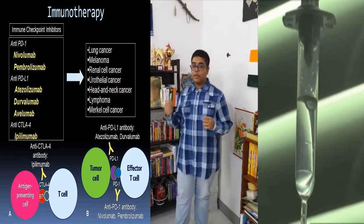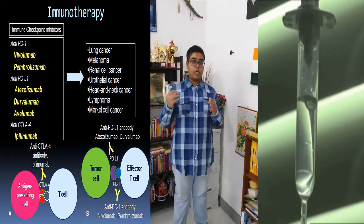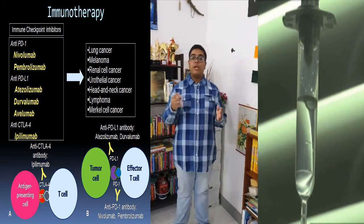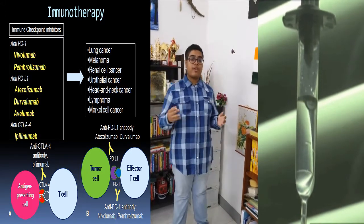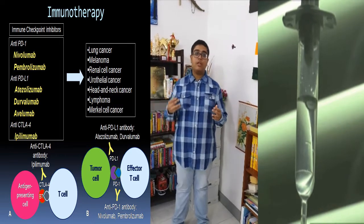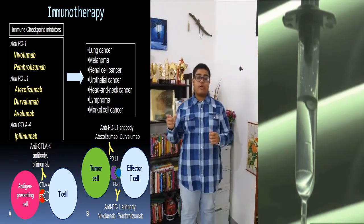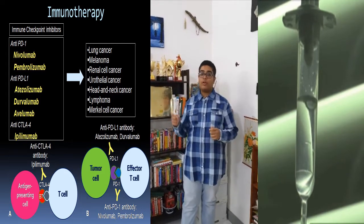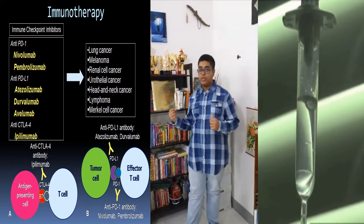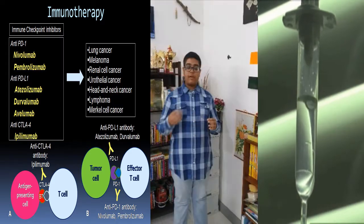The FDA approved the first immune checkpoint inhibitor in 2011 for the treatment of advanced metastatic melanoma. Since then, immune checkpoint inhibitors have been used as the standard treatment in some forms of melanoma, lung cancer, and kidney cancer. Research is ongoing to develop new monoclonal antibody drugs for use as immune checkpoint inhibitors against many other types of cancers to improve patient outcomes and survival.